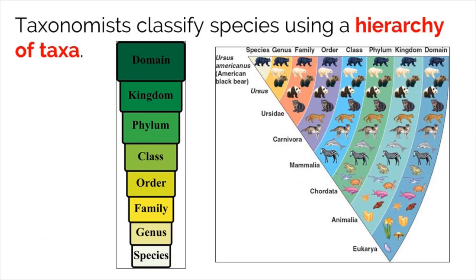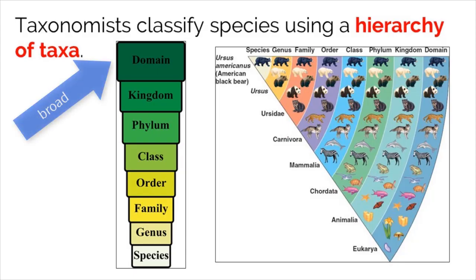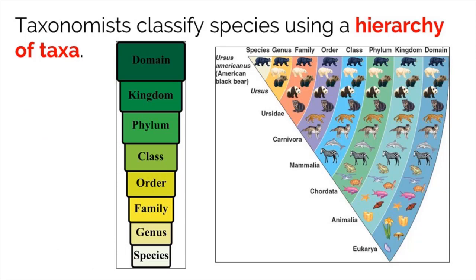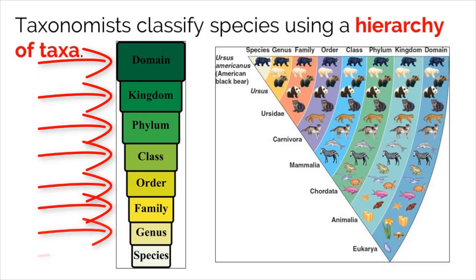Taxonomists correctly classify organisms using a hierarchy system, which operates from the broadest to the most specific level. In order from broad to specific, the classification hierarchy starts with one of the three domains, and then moves down the ladder through kingdom, phylum, class, order, family, genus, and finally species.